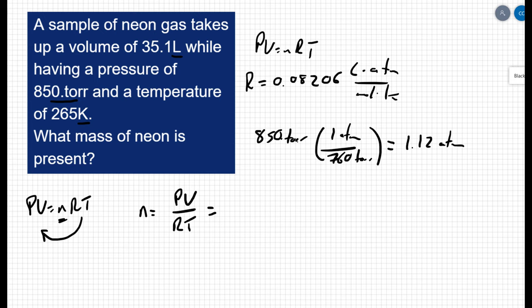My pressure in the correct units is 1.12 atmospheres. My volume was given to me as 35.1 liters. R is 0.08206 liters times atmospheres over moles times Kelvin. My temperature is given to me as 265 Kelvin.